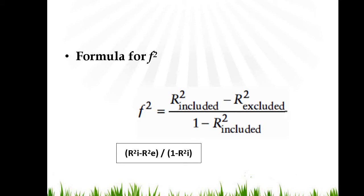So here is a formula for calculating f-square. You calculate R-square by including all exogenous variables, then you calculate R-square when you exclude one exogenous variable which you want to study, and then divide it by 1 minus R-square after including the exogenous variable.